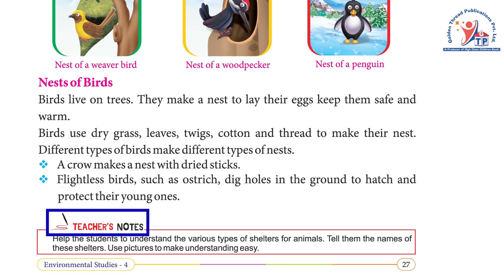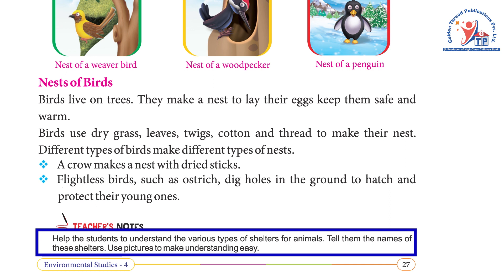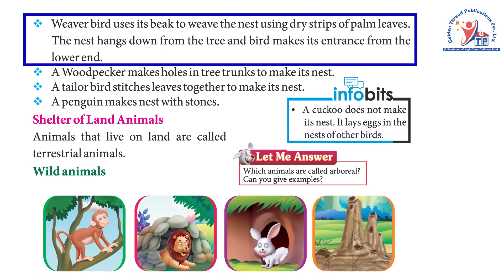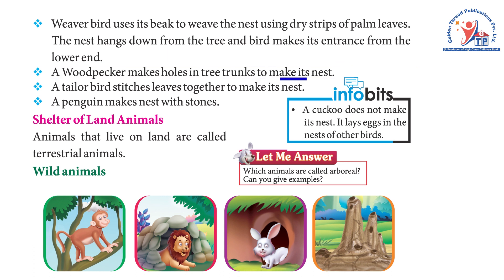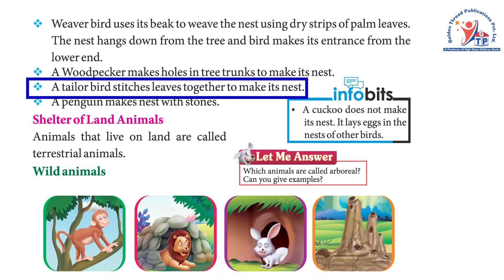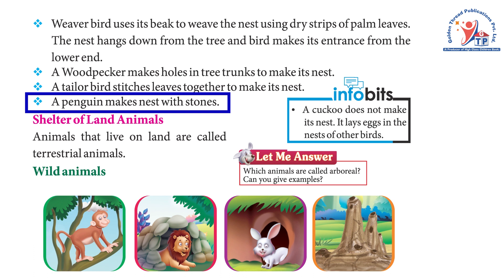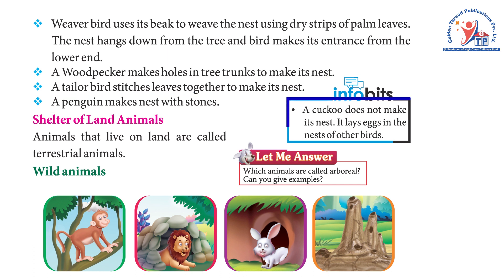Teacher's note: Help students understand the various types of shelters for animals and tell them the names of these shelters; use pictures to make understanding easy. Weaver birds use their beak to weave a nest using dry strips of palm leaves — the nest hangs down from the tree with an entrance at the lower end. A woodpecker makes holes in tree trunks for its nest. A tailor bird stitches leaves together. A penguin makes a nest with stones. A cuckoo does not make its own nest — it lays eggs in the nests of other birds.